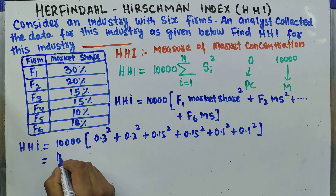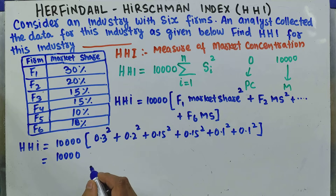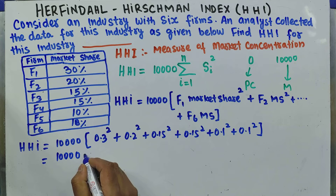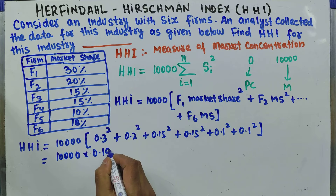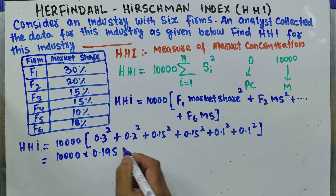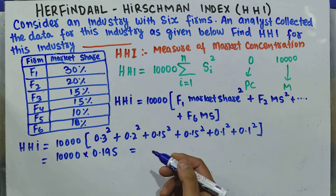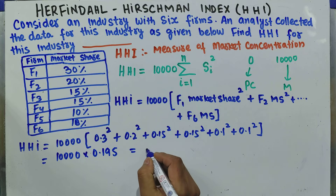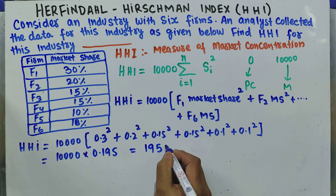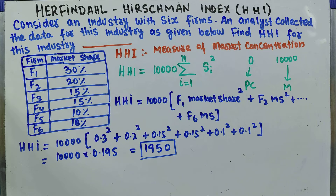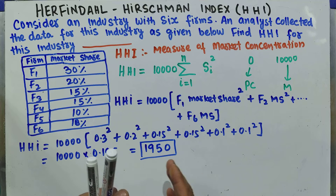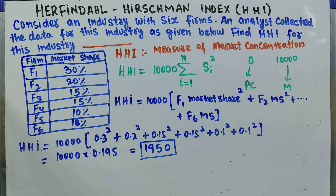When we solve this, we get 10,000 times 0.195, and our HHI comes out to be 1,950. This is the Herfindahl-Hirschman Index for this industry.